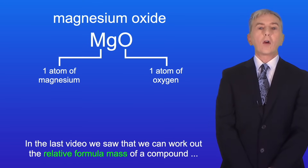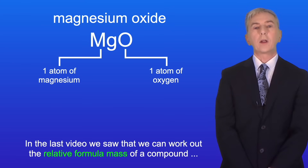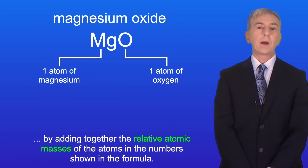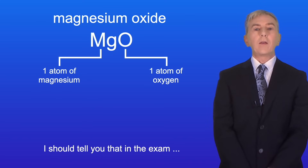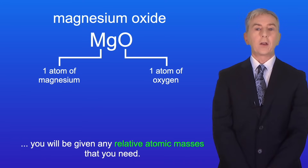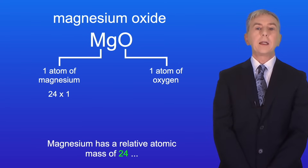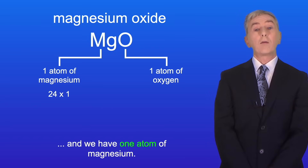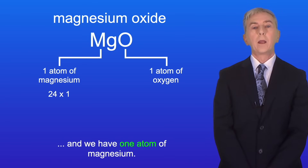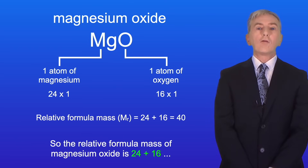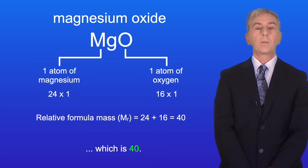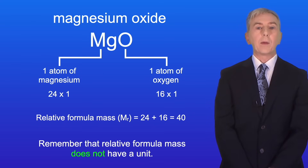We can work out the relative formula mass of a compound by adding together the relative atomic masses of the atoms in the numbers shown in the formula. The symbol for relative formula mass is Mr. In the exam you'll be given any relative atomic masses that you need. Magnesium has a relative atomic mass of 24 and we have one atom of magnesium. Oxygen has a relative atomic mass of 16 and we have one atom of oxygen. So the relative formula mass of magnesium oxide is 24 plus 16, which is 40. Remember that relative formula mass does not have a unit.